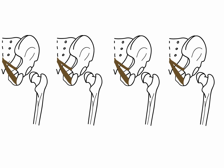The sacrospinous ligament forms the greater sciatic foramen, and the sacrotuberous and sacrospinous ligaments together help to form the lesser sciatic foramen. These are important landmarks to remember as we go through the musculature.